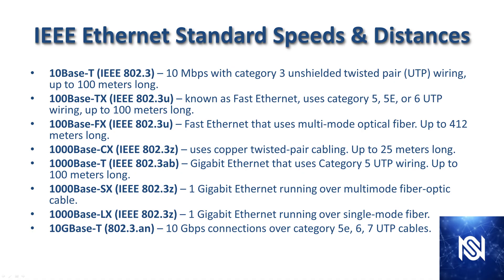From that table I've extracted a lot of the standards you probably want to look at and memorize. The first one is 10 Base-T, which gives you the speed with three unshielded twisted pairs. There are three twisted pairs in there and you can have up to 100 meters long.